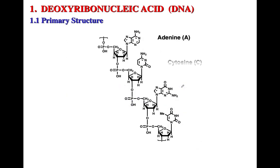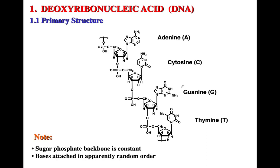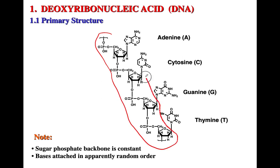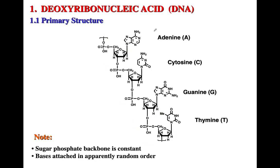Looking back at the primary structure, now that you know the bases — adenine, cytosine, guanine, and thymine — they are part of this small nucleic acid. The sugar-phosphate portion is going to be constant, and the bases will be attached in a different order for each of the DNA oligonucleotides.